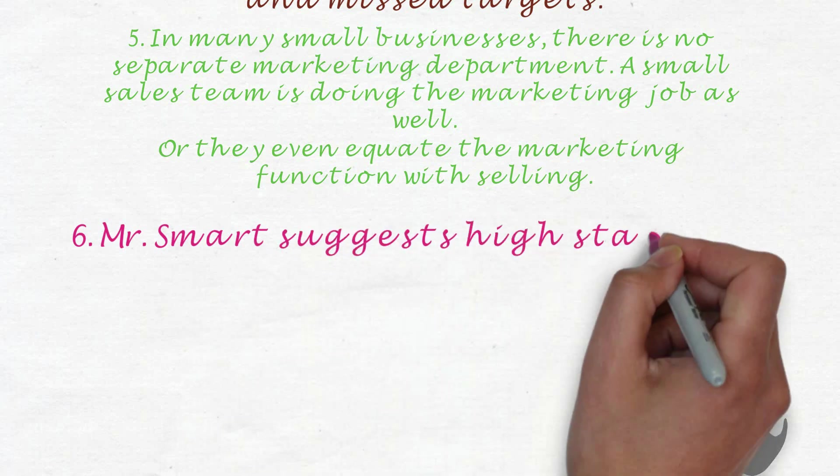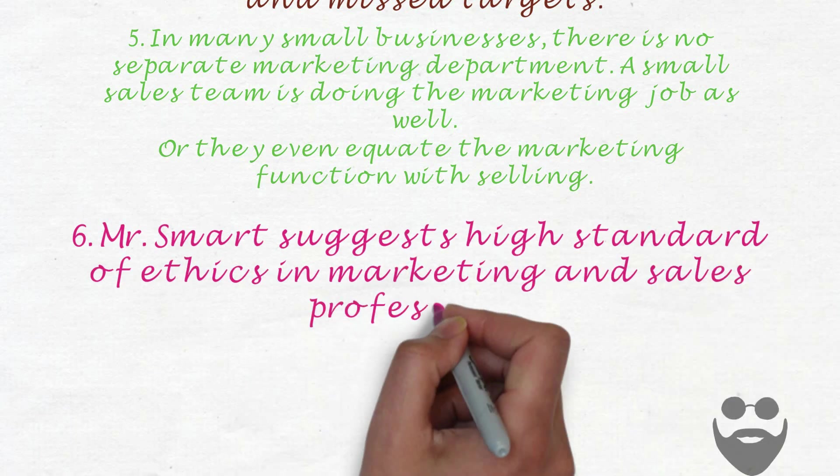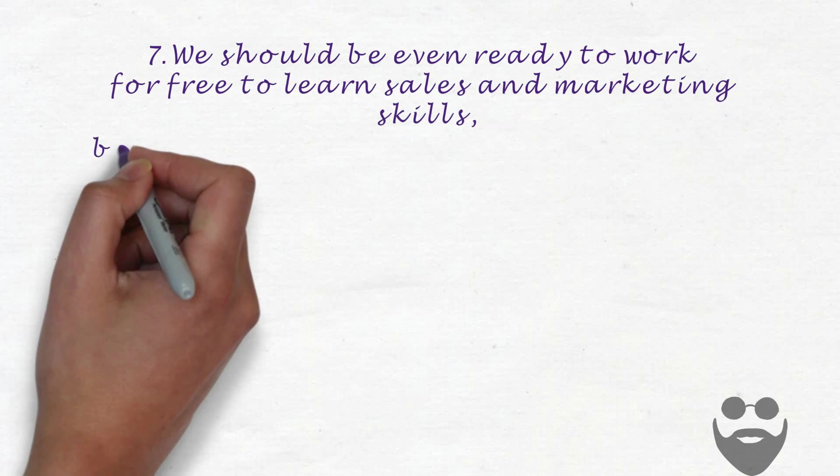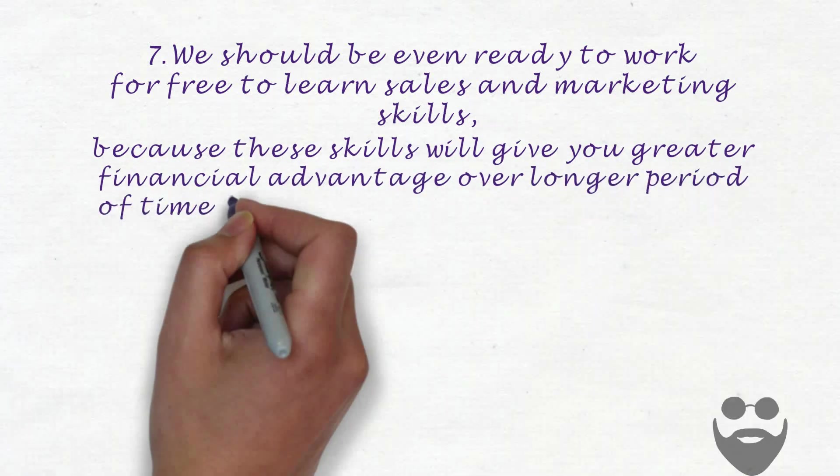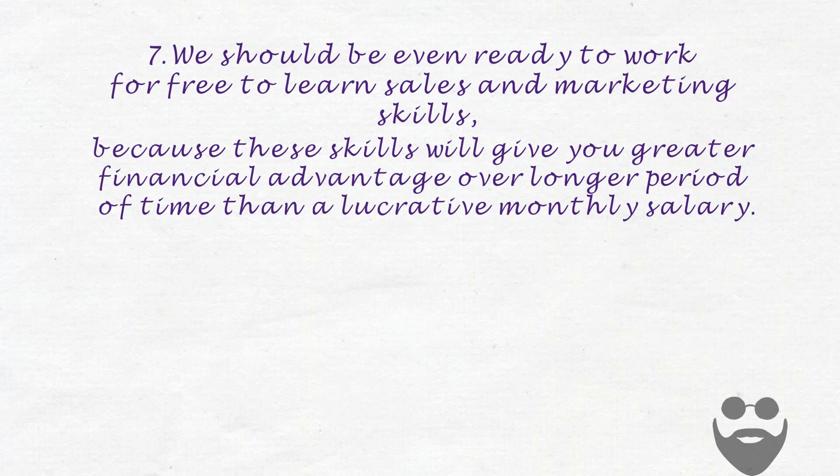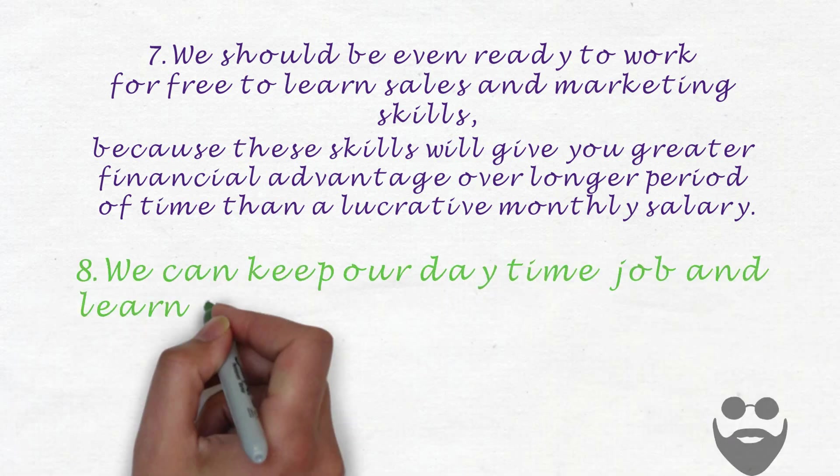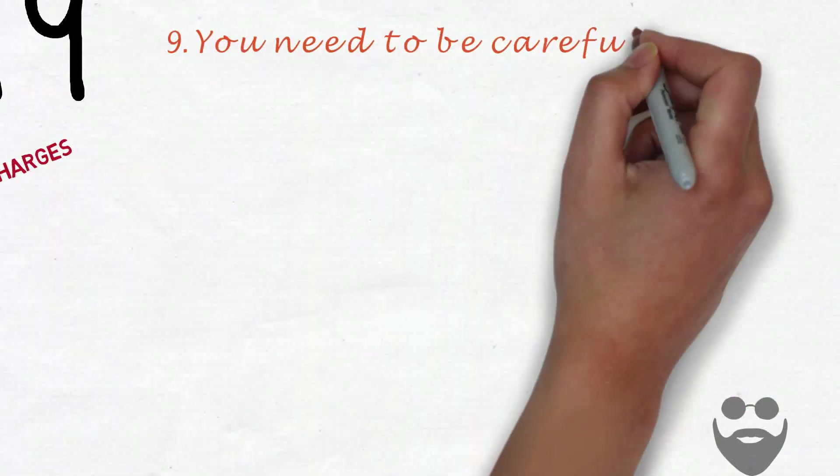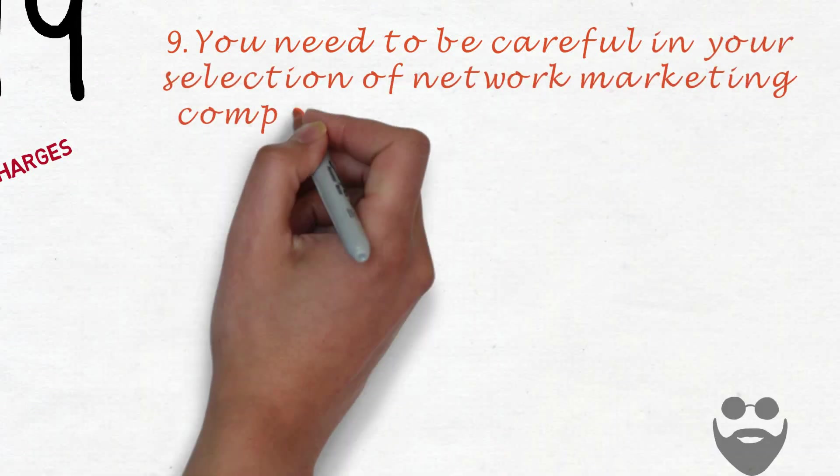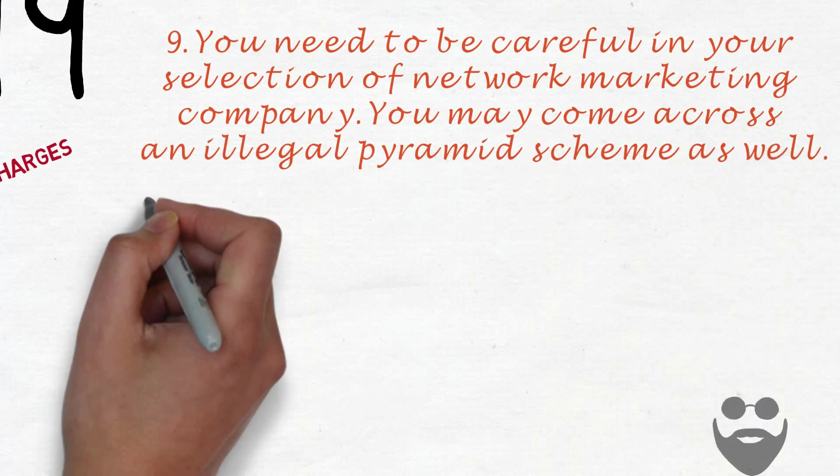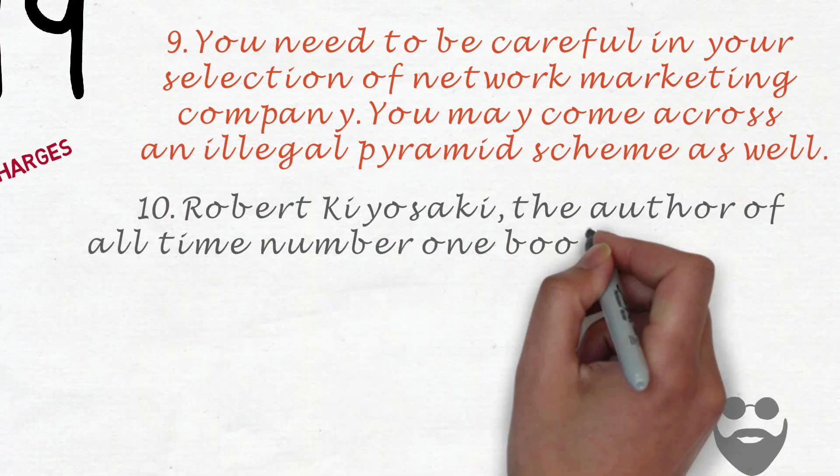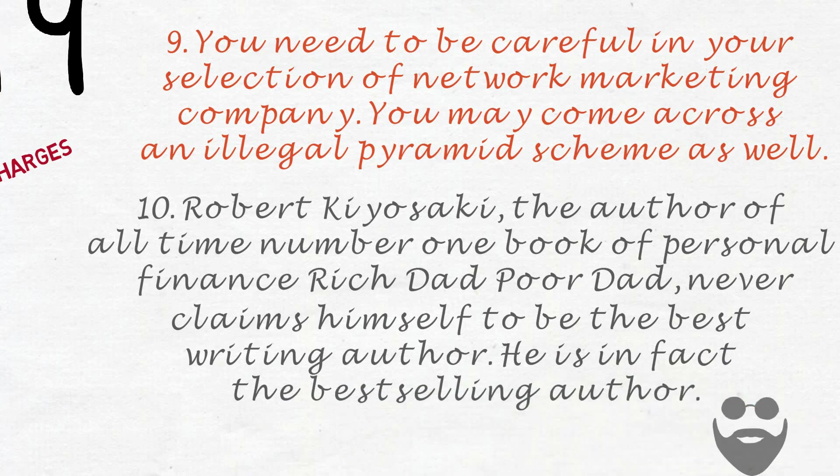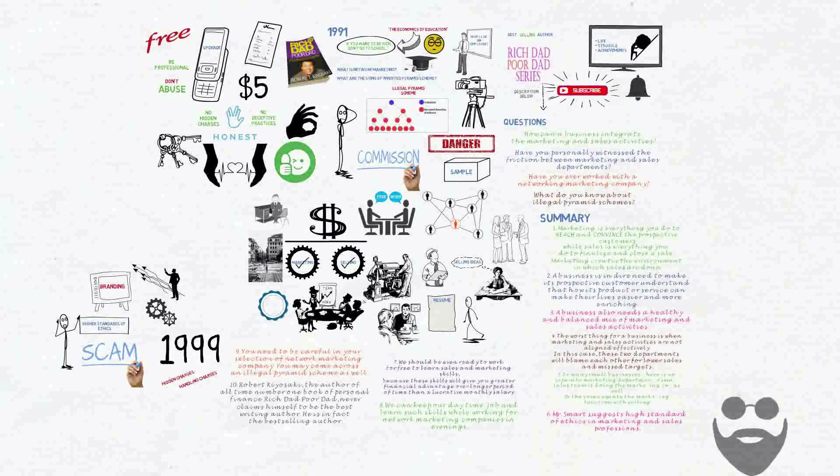Six, Mr. Smart suggests a high standard of ethics in marketing and sales professions. Seven, we should be willing to work for free to learn sales and marketing skills, because these skills will give you the greatest financial advantage over a longer period of time. Eight, we can keep our day job and learn these skills while working for network marketing companies at night. Nine, you need to be careful in your selection of network marketing companies. You may come across an illegal pyramid scheme. Ten, Robert Kiyosaki, the author of Rich Dad Poor Dad, never claims to be the best writing author, but he is in fact a best-selling author.